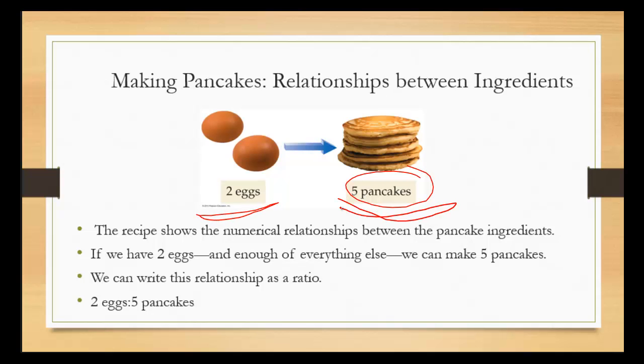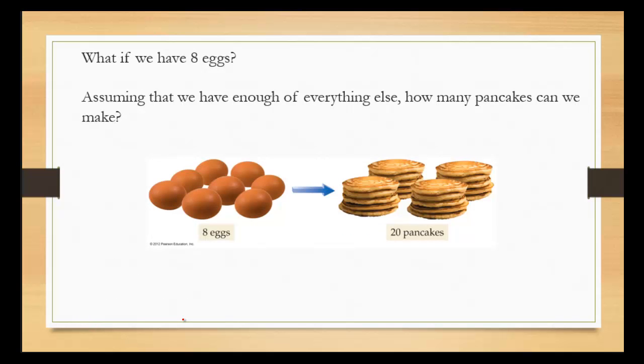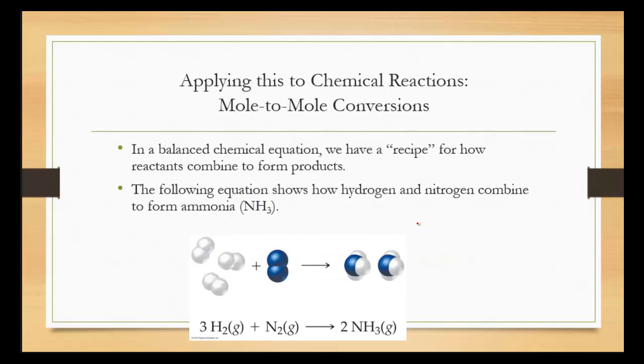If we have two eggs and enough of everything else, we can make five pancakes. We can write this as a relationship, two to five. But what if we have eight eggs? Then we can make even more pancakes assuming that we have enough of everything else. This is just how a chemical equation is written. The chemical equation is the recipe for how we're going to make these products.